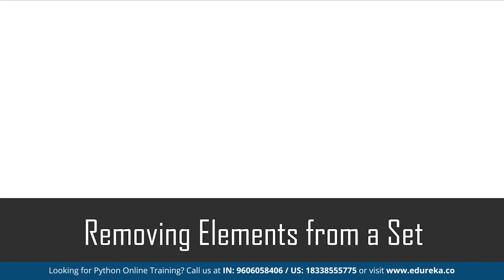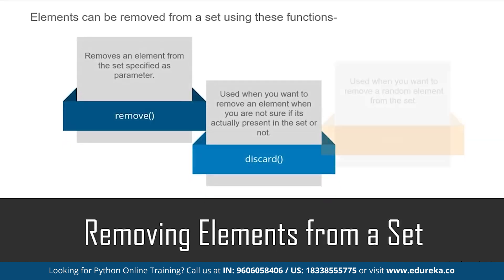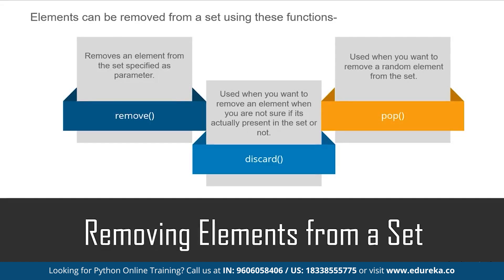To remove elements from a set, you can use the remove(), discard() or pop() methods. The remove() method takes one parameter — the element to be removed — but if that element is not present in the set, it will throw an error. If you're not sure whether an element is present in your set but want to ensure it's removed without an error, you can use the discard() method. The discard() method takes one parameter, and if that element is not present in the set, it will not throw any error. The pop() method removes a random element from your set.